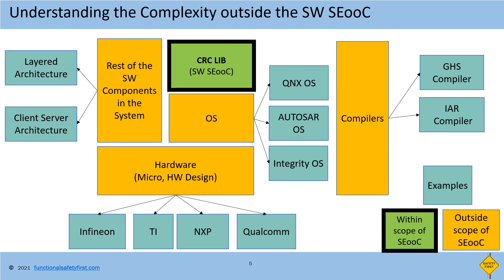Let's take a CRC library as an example of our SEooC. The purpose of this library is to calculate CRCs over a number of data bytes. The component supports various types of CRC algorithms such as 8-bit, 16-bit, 32-bit, and 64-bit calculation. Given the job of this component is so generic, it may be used for a wide variety of purposes, such as calculating CRC to protect a memory region or to add redundancy for data communication. The CRC library may be assumed to run in various microcontrollers such as Infineon, TI, NXP, and Qualcomm, in various operating systems such as QNX, Integrity, and Autosar OS, in layered as well as client-server architecture models, and built using GHS compiler and IAR compiler.